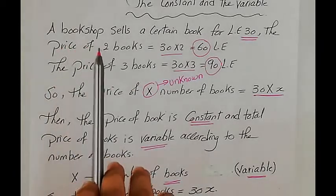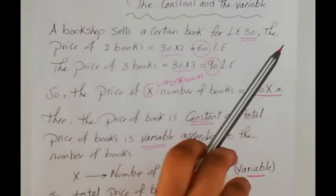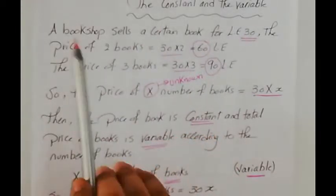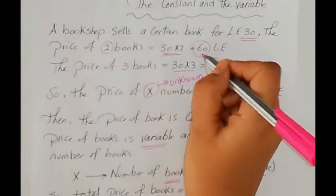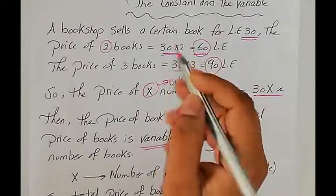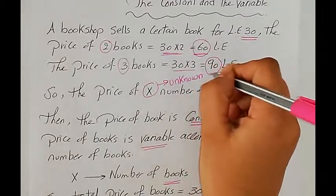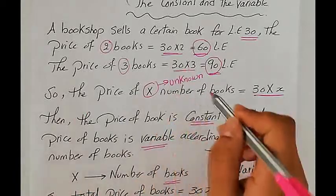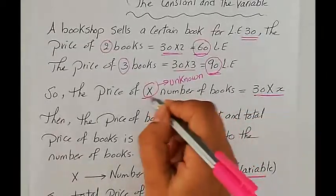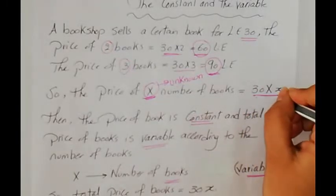If we have a bookshop that sells a certain book for 30 LE, and we want to know the price of two books, we multiply 30 by 2 and the result will be 60. But if we want to know the price of three books, we multiply 30 by 3 and the result will be 90. So the price of X number of books, where X is an unknown value, will be 30 multiplied by X.